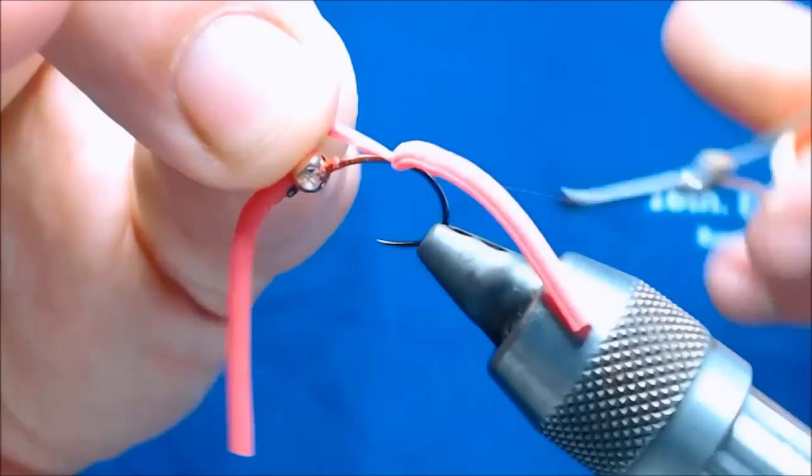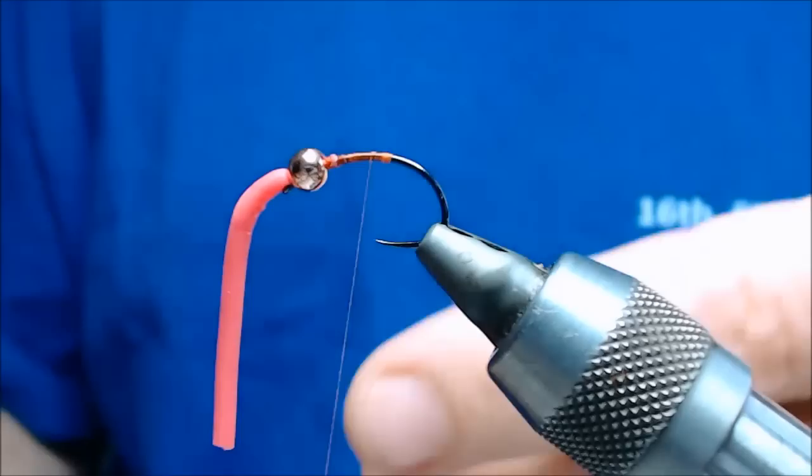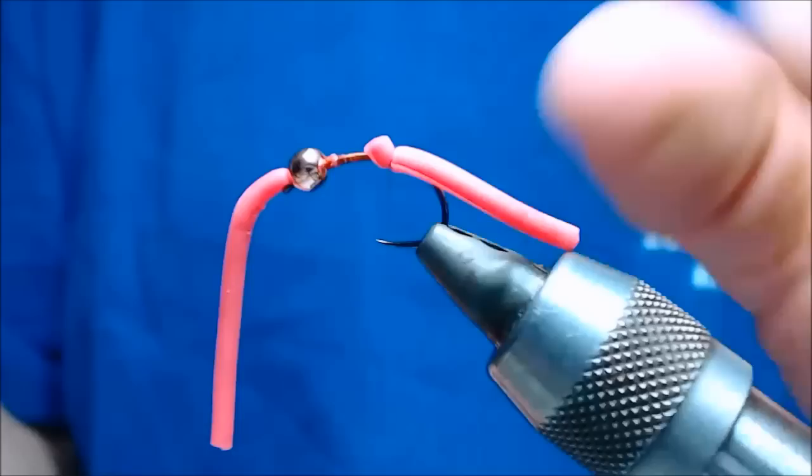A couple of wraps going back the way. And then this is a tricky bit because the camera's in the way. Alright, I'm going to take that back off because that bit is trying to break. So trim it off, so I've got a good solid piece to work with.